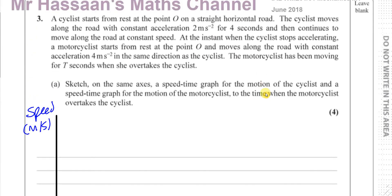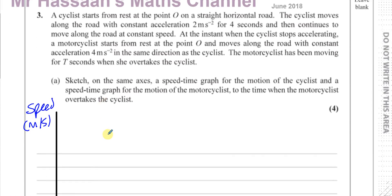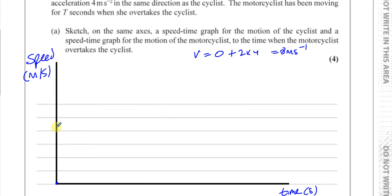The cyclist starts from rest, so at time equals zero speed is zero, and accelerates at constant acceleration for four seconds. Using V equals U plus AT, with U = 0, A = 2, and T = 4, the cyclist reaches 8 meters per second. So we mark 8 on the speed axis and 4 on the time axis. It's just a sketch, nothing needs to be perfectly accurate.